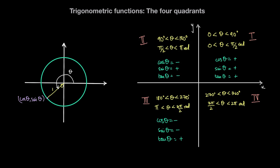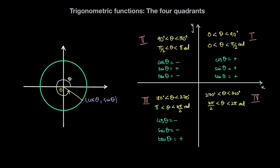If theta is in the fourth quadrant — between 270 and 360 degrees, or between 3 pi over 2 and 2 pi radians — the x-coordinate (cosine of theta) is positive since the point is to the right of the y-axis, and the y-coordinate (sine of theta) is negative since it's below the x-axis. Therefore, cosine of theta is positive, sine of theta is negative, and tan of theta — a negative divided by a positive — takes on a negative value.